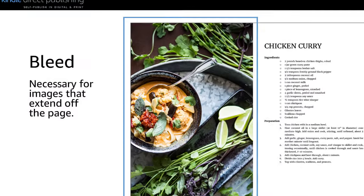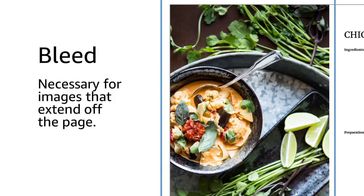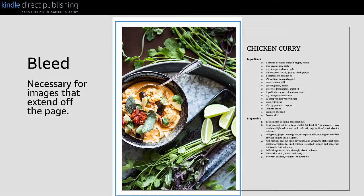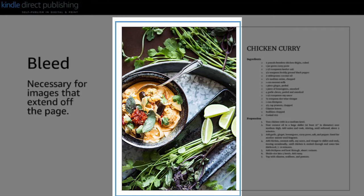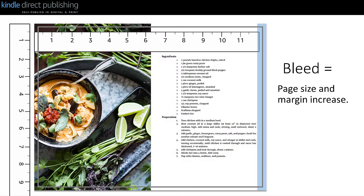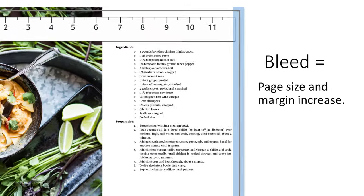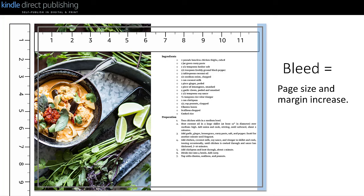Bleed is a printing term that refers to the way a file is set up to print. Setting your file with bleed means that objects such as images, background color, or graphics can extend all the way to the edge of the page. To set up your file with bleed, you first increase your page size and margins, and then extend the object beyond where the book will be trimmed. This ensures that the object will reach all the way to the edge of the page when your book is trimmed to size.